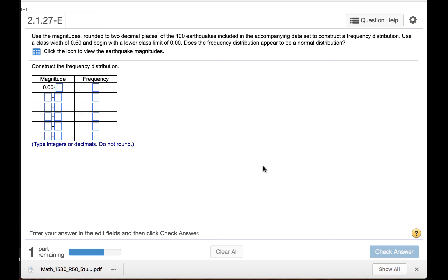Use the magnitudes rounded to two decimal places of the 100 earthquakes included in the accompanying dataset to construct a frequency distribution. Use a class width of 0.50 and begin with a lower class limit of 0.00. Does the frequency distribution appear to be a normal distribution?